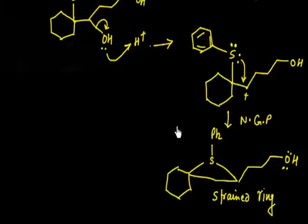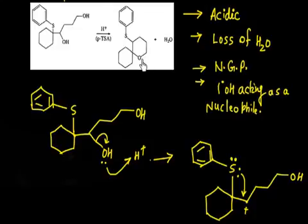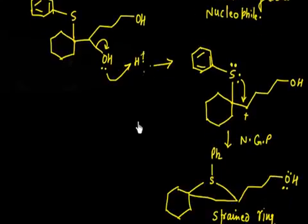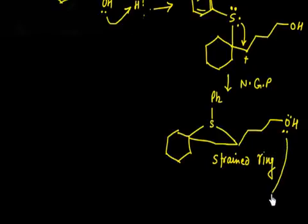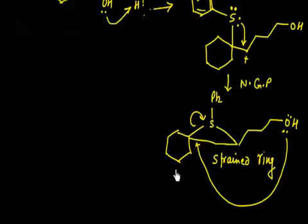Looking at the product, you need one oxygen attached to this carbon. So what you can do is attack this oxygen on this carbon and open this carbon-sulfur bond. Follow this step: the oxygen attacks, and this bond opens on this side.